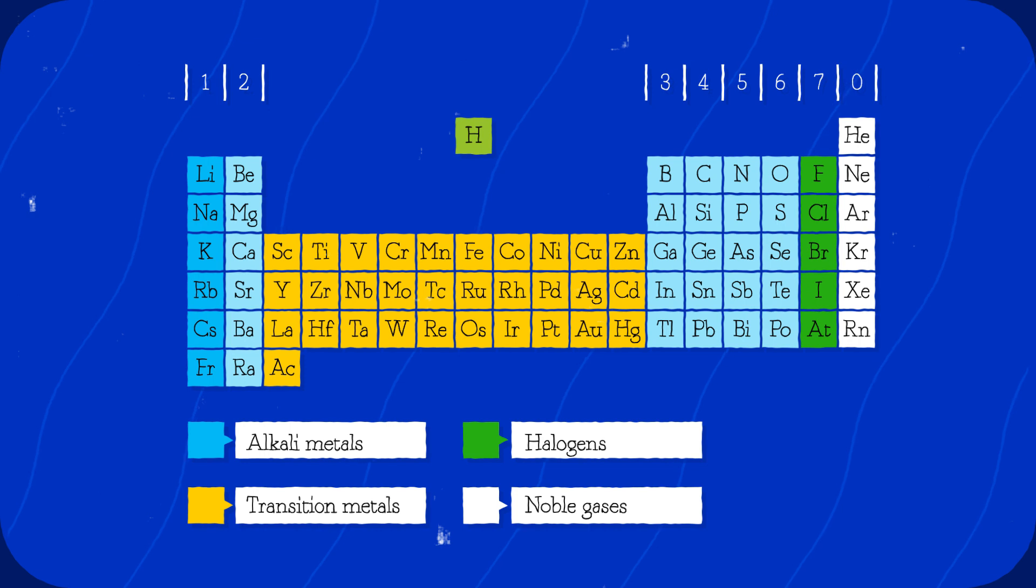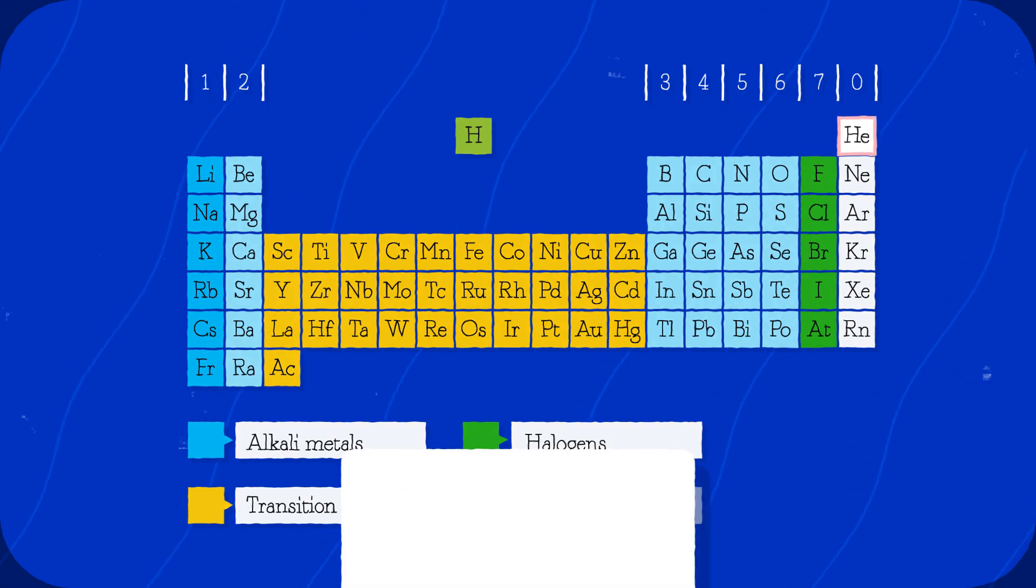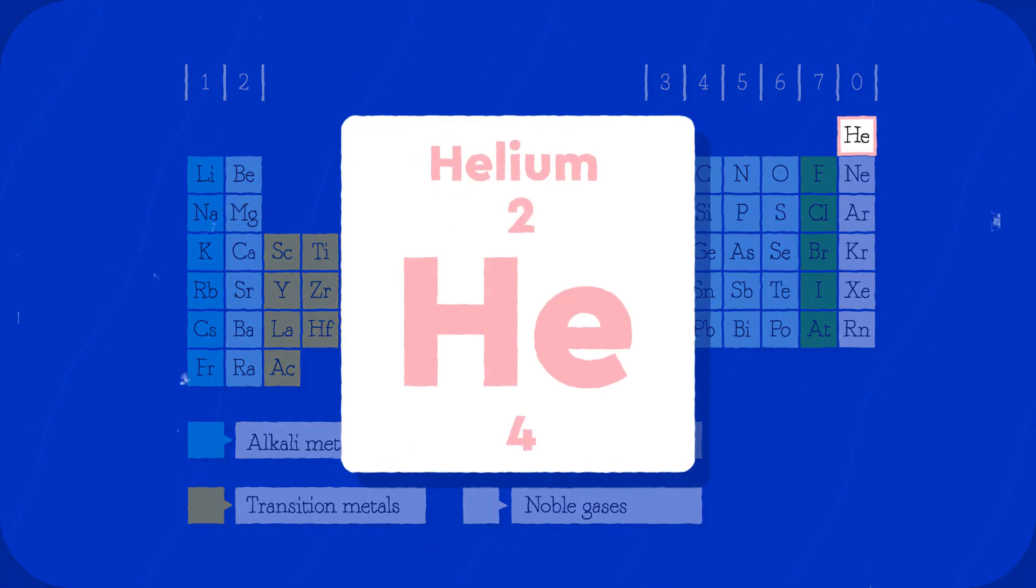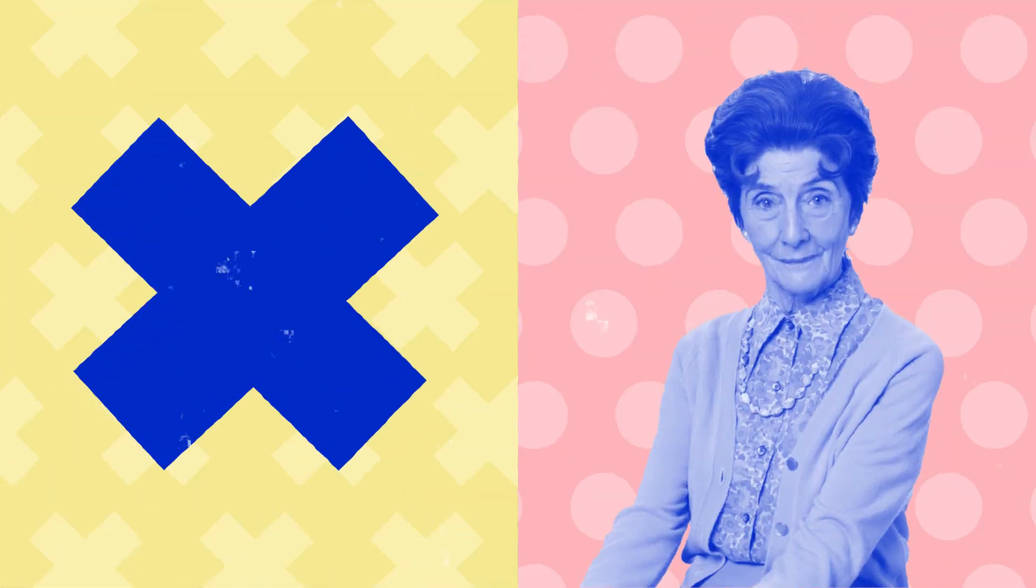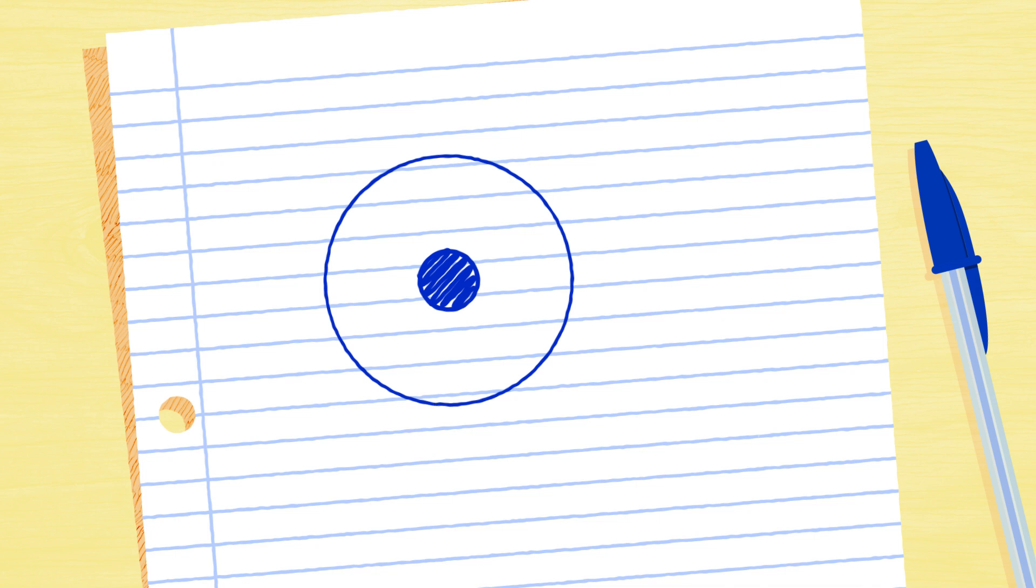Let's apply this to some atoms. We'll have a look at helium first. If we look at the periodic table, we can see helium has an atomic number of two. This tells us that helium has two protons in its nucleus and we know that a neutral atom will have the same number of electrons. When drawing electronic configuration, you draw the nucleus as a dot in the middle and the first shell as a ring around the outside. You can add electrons to the shells as either crosses or dots. Helium has two electrons, so both of these will fit on the first shell looking like this.